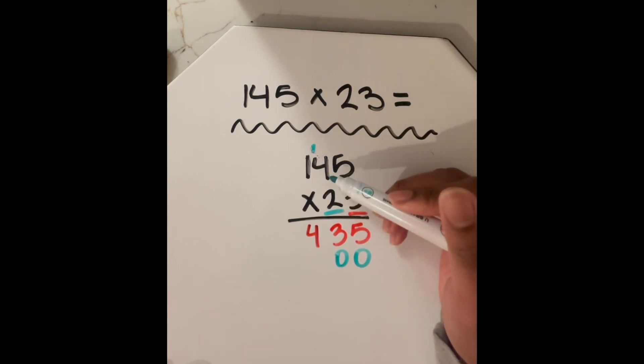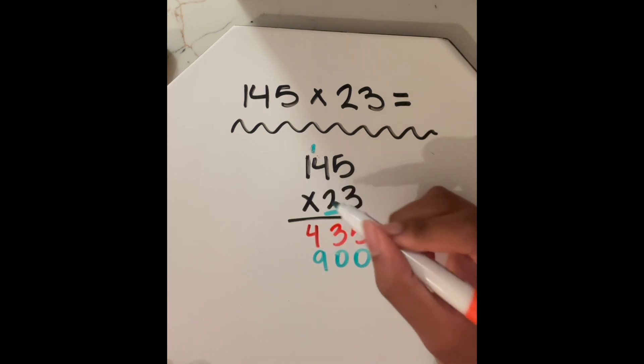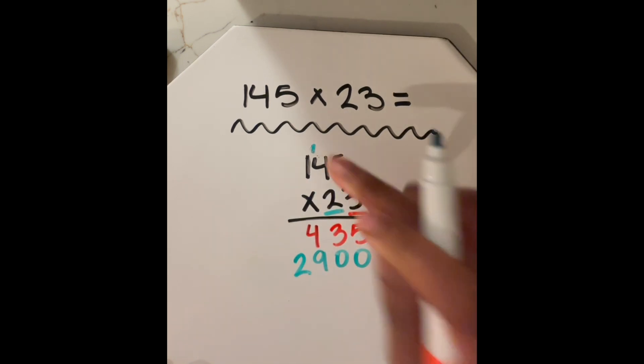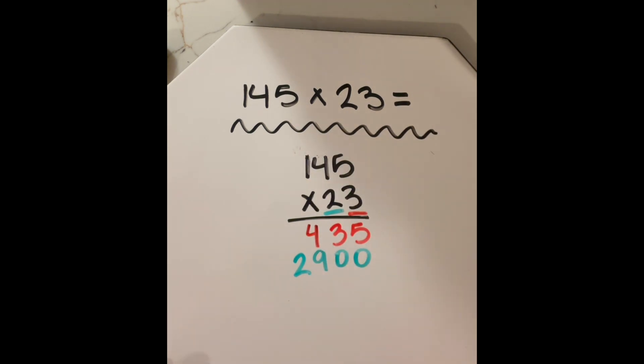That one is going to go above the four and the zero is going to come down here. And then we're going to do two times four, two times four is eight. We're going to add that eight to that one up here, which is nine, put the nine down here, and then we'll do two times one, which is just two. So there's that. Again, I'm going to just erase this for now so I don't get confused.